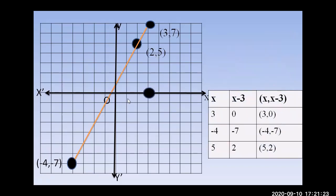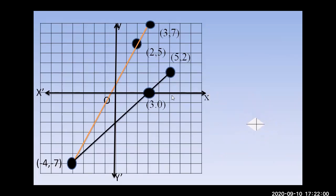From Table 2, plot (3, 0): go 3 right, ordinate is zero so stay on x-axis. Point (−4, −7) is the same as already plotted. Plot (5, 2): go 5 right and 2 up. Join these three points to get a second straight line. Both lines are now drawn on the same graph.